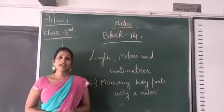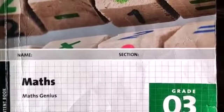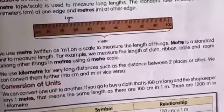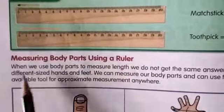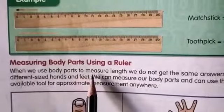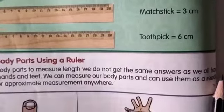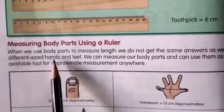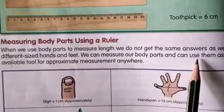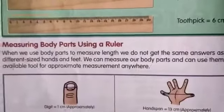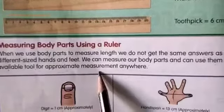Children, all of you open your maths books. Measuring body parts using a ruler. When we use body parts to measure length, we do not get the same answers as we all have different sized hands and feet. We can measure our body parts and use them as a readily available tool for approximate measurement anywhere.